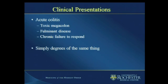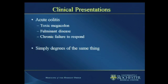We'll run very quickly through the presentations and start with acute colitis, where patients, as you know in your day-to-day practice, present with some version of these three terms: toxic megacolon, fulminant disease, chronic failure to respond. To a great extent, they're simply degrees of the same thing. These are patients who are usually quite sick. When I mean chronic failure to respond, I mean somebody who's been in a hospital for two weeks rather than a 10-year history. These are usually inpatients or patients who've been admitted recently.